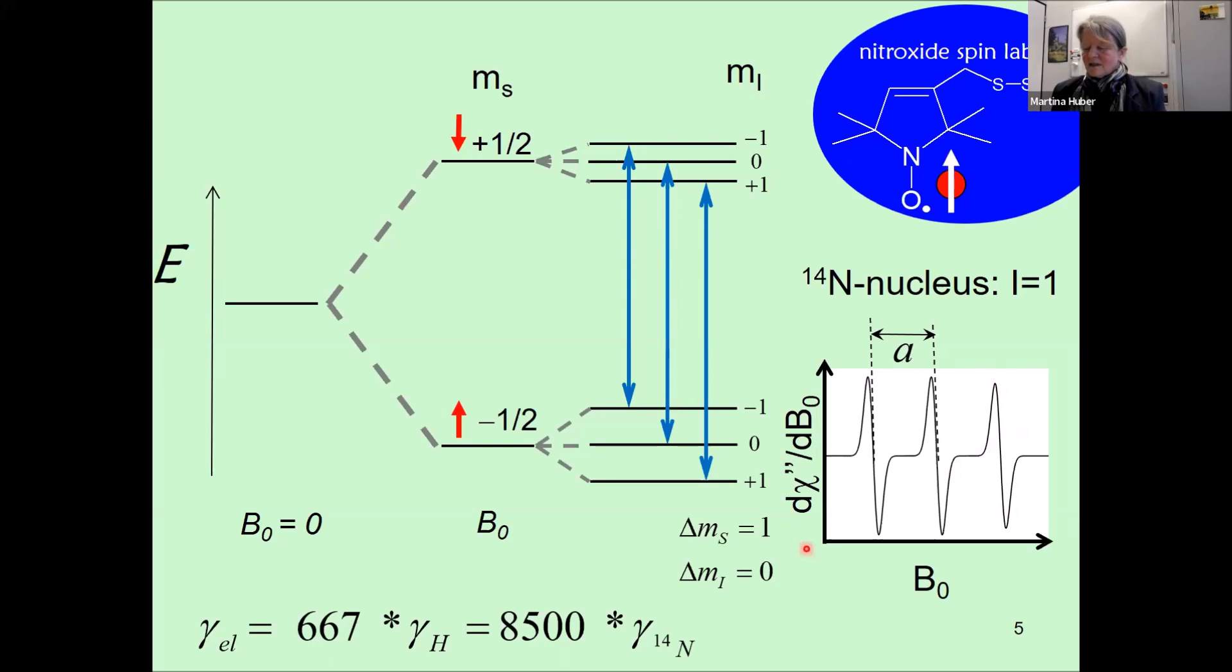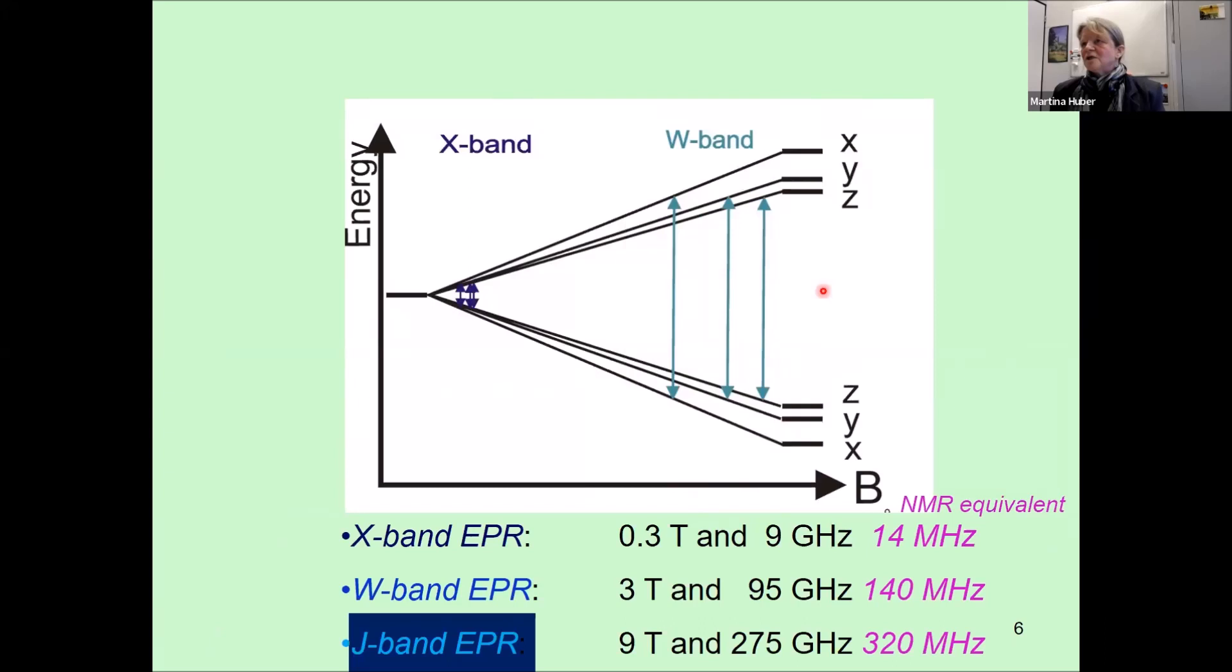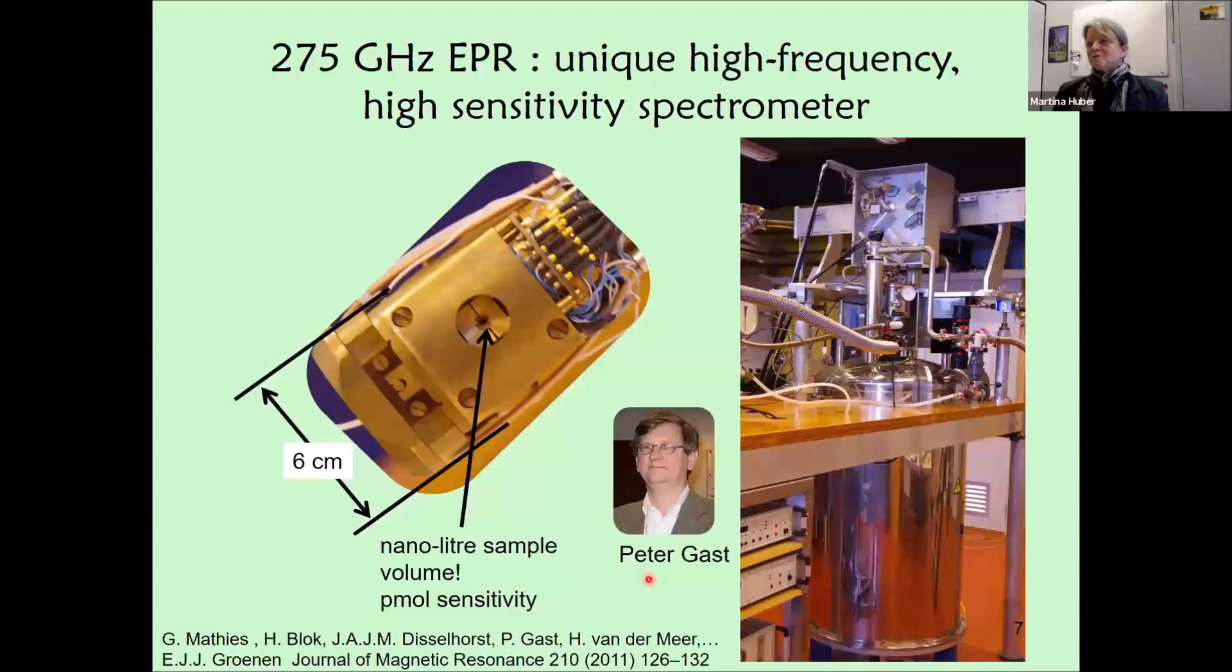We do EPR in continuous wave and sweep the magnetic field. To make your life even more complicated, we detect the first derivative of the signal, so you see these funny line shapes. One of the things we're interested in is increasing the resolution. One way to increase resolution is to go to higher fields, as you know. Typical EPR spectra are done at 9 gigahertz, 0.3 Tesla, comparable to a 14 megahertz NMR spectrometer.